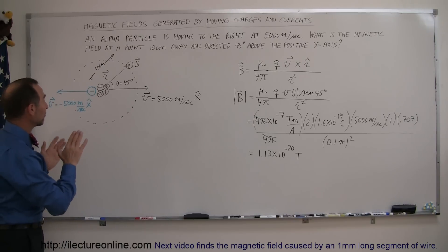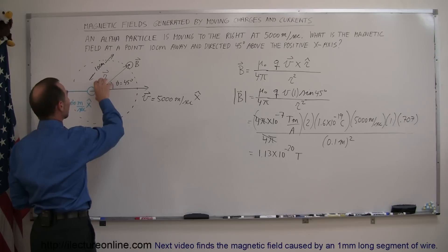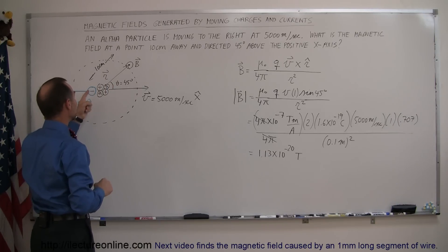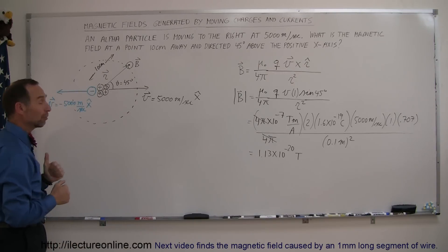So since we already found the direction and the magnitude of the magnetic field caused by the alpha particle let's now find the direction and the magnitude of the magnetic field caused by the electron moving in the opposite direction.